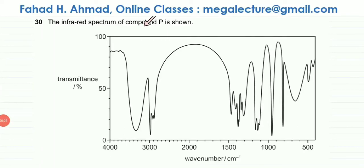The following question reads that an infrared spectrum of compound P is shown. So this is compound P and this is the infrared spectrum. These are the wave numbers and this is the transmittance.